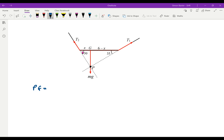And the other triangle: PG over 6 minus x is tan 35, so PG is 6 minus x times tan 35.